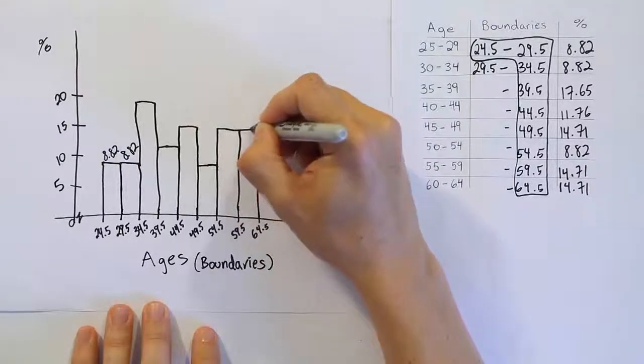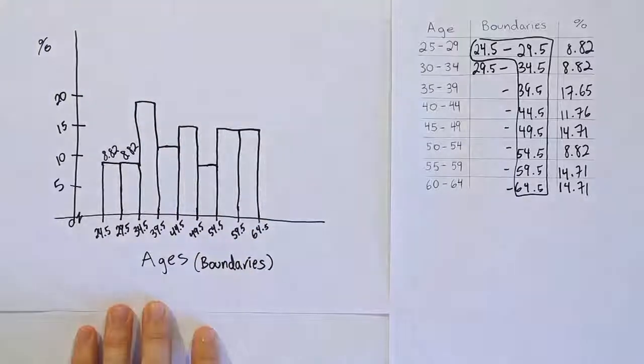And then about 15 again for the last two. So there's my drawing. I've left off the remaining labels, but that's basically it. So that's our histogram. There's a bar chart that we've created using this table of data, and that's a pictorial representation of the information.